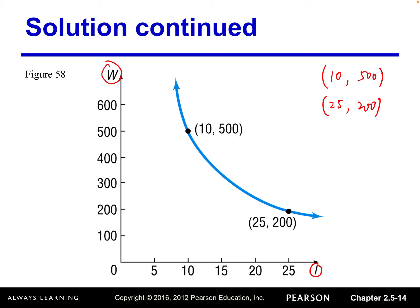And then we can easily plot these two points: 10, 500 and 25, 200. And then we know reciprocal function graph is this kind of curve. So we use this smooth curve to connect the two points. That's the brief graph we can plot for this model.